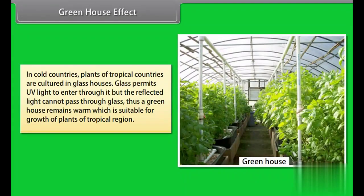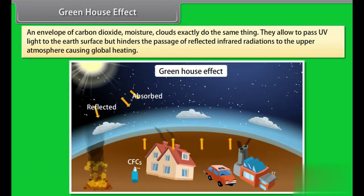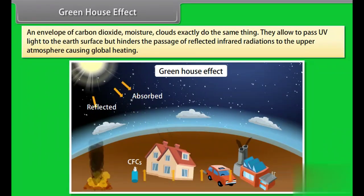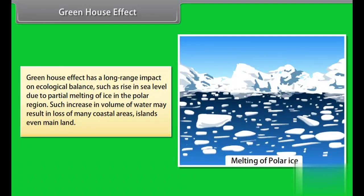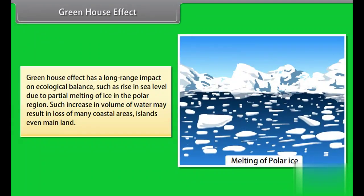Greenhouse effect. In cold countries, plants of tropical countries are cultured in glass houses. Glass permits UV light to enter through it, but the reflected light cannot pass through glass. Thus, a greenhouse remains warm, which is suitable for growth of plants of tropical region. An envelope of carbon dioxide, moisture, and clouds exactly do the same thing. They allow UV light to pass to the Earth's surface, but hinder the passage of reflected infrared radiations to the upper atmosphere, causing global heating. Greenhouse effect has a long-range impact on ecological balance, such as rise in sea level due to partial melting of ice in the polar region. Such increase in volume of water may result in loss of many coastal areas, islands, even mainland.